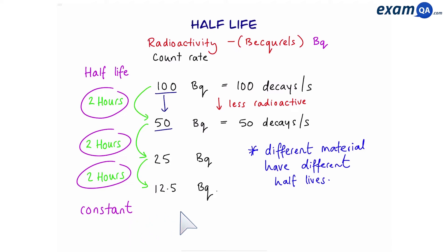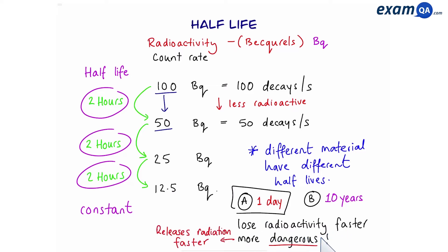Now different samples have different half-lives. For example, if you have two different materials, A and B, one could have a half-life of one day. Another one could have a half-life of 10 years. Also, it's worth noting that things that have lower half-lives will lose their radioactivity faster. But at the same time, they can be more dangerous because they release a lot of radiation in a short space of time.